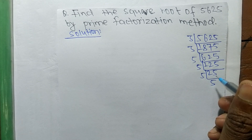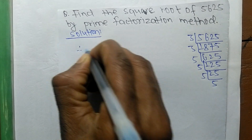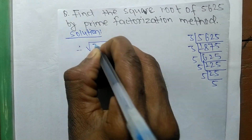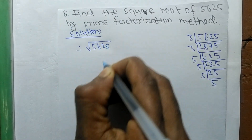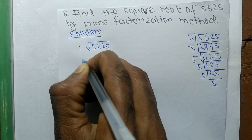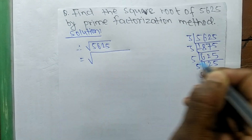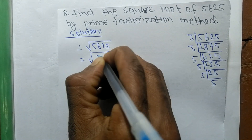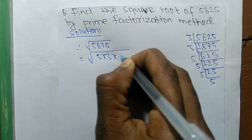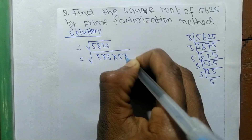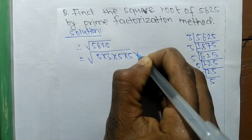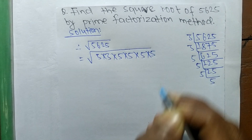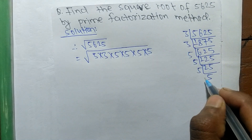Now we find out the square root. Therefore, the square root of 5625 is equal to — from the prime factors we can write 3 into 3, 5 into 5, into 5, into 5, into 5. So the product of all these prime factors...